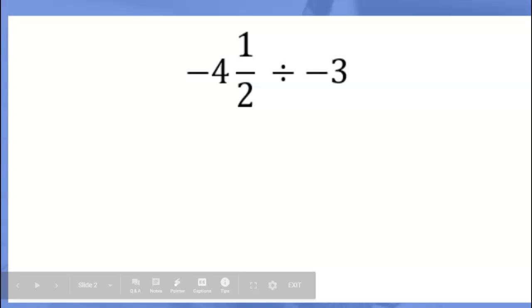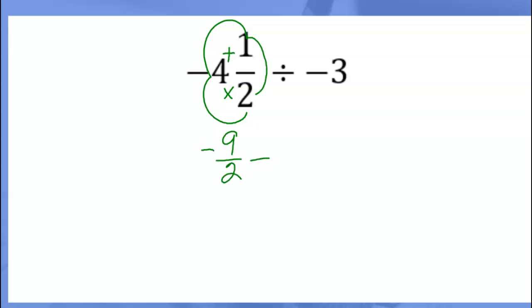The bellwork problem was negative four and a half divided by negative three. When we're dividing mixed numbers, the first thing we do is change them to improper fractions. Four times two is eight plus one more is nine over two, so this becomes negative nine-halves divided by negative three over one. When dividing fractions, we multiply by the reciprocal of the divisor, so this becomes negative nine-halves times negative one-third.